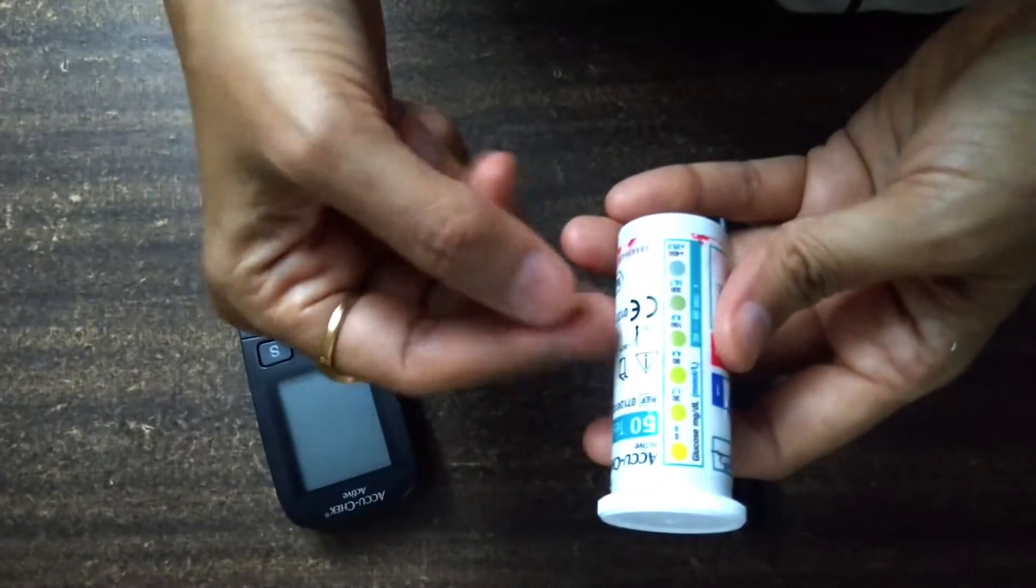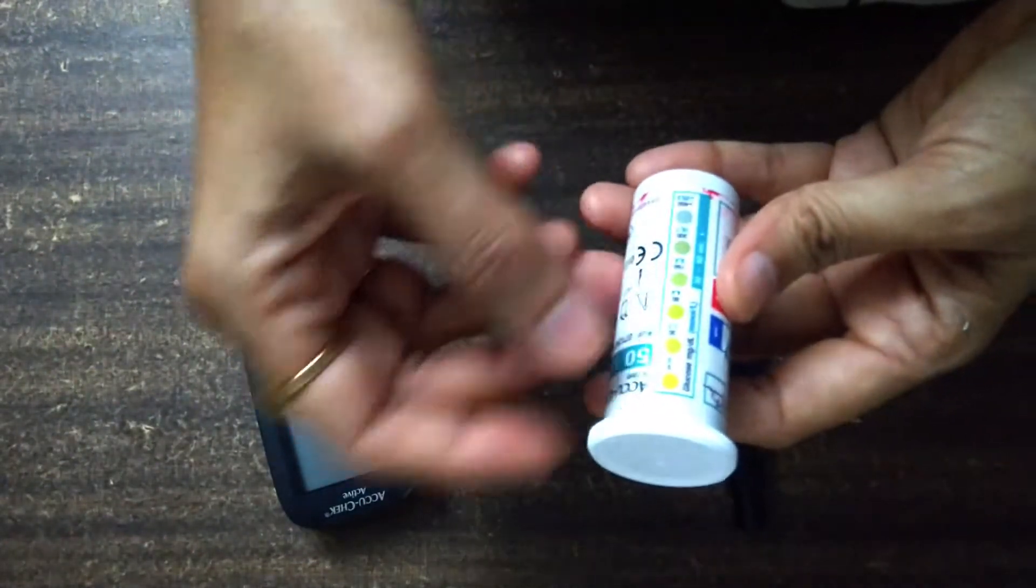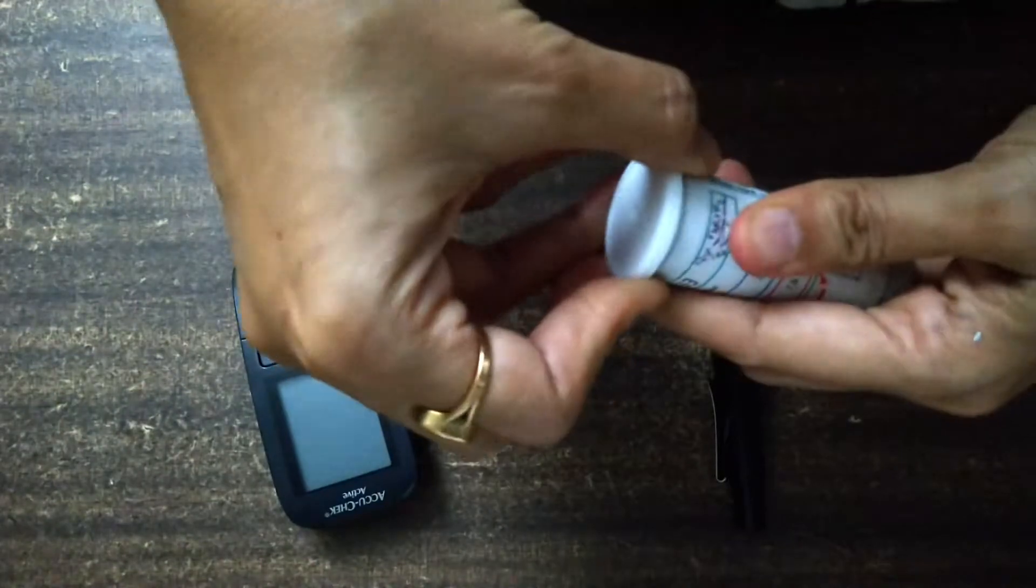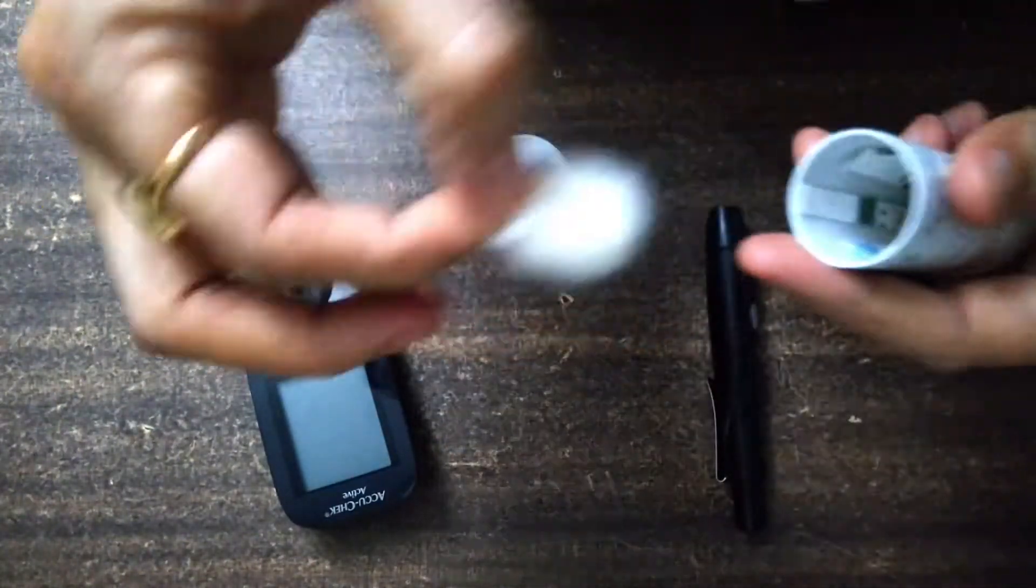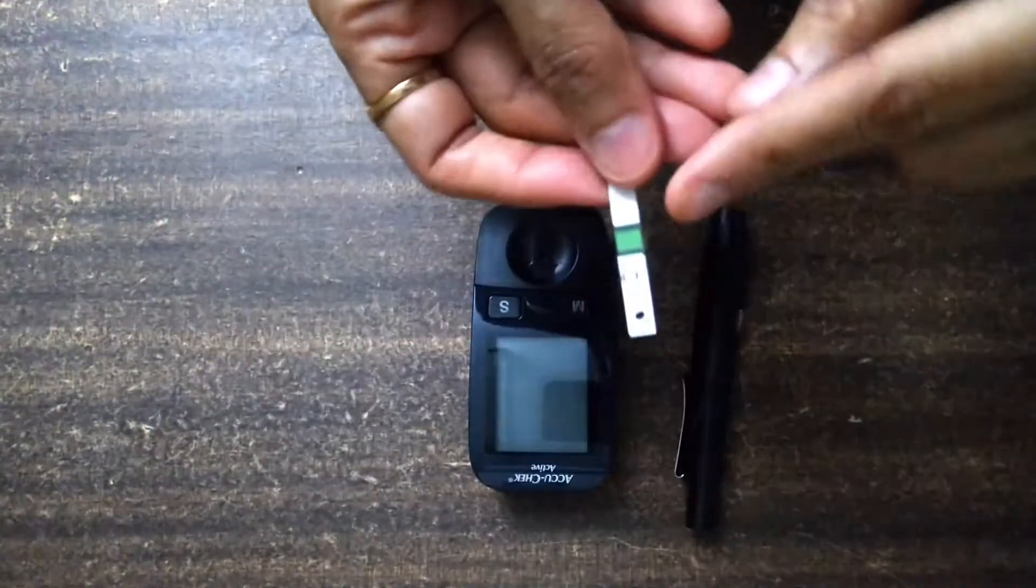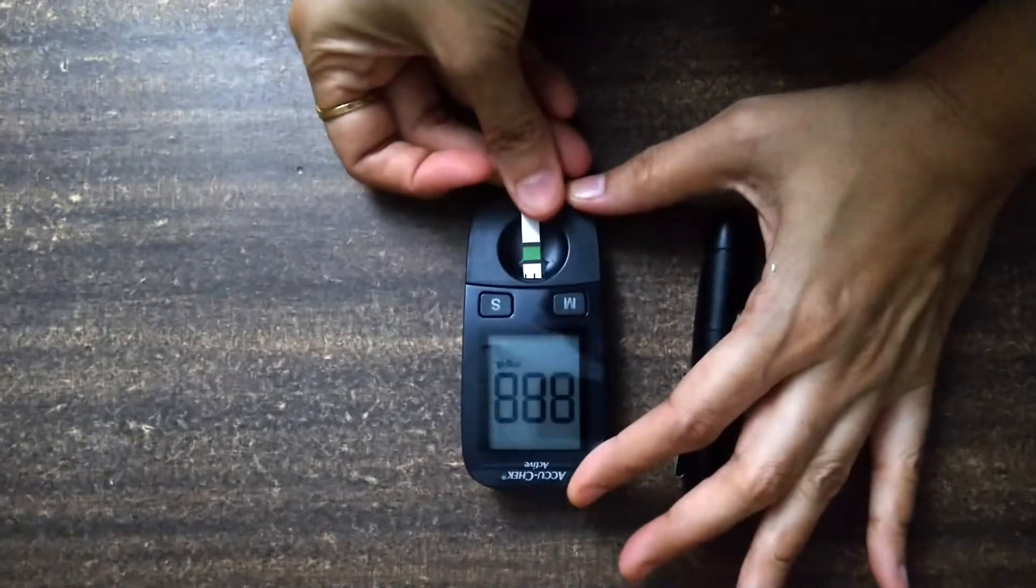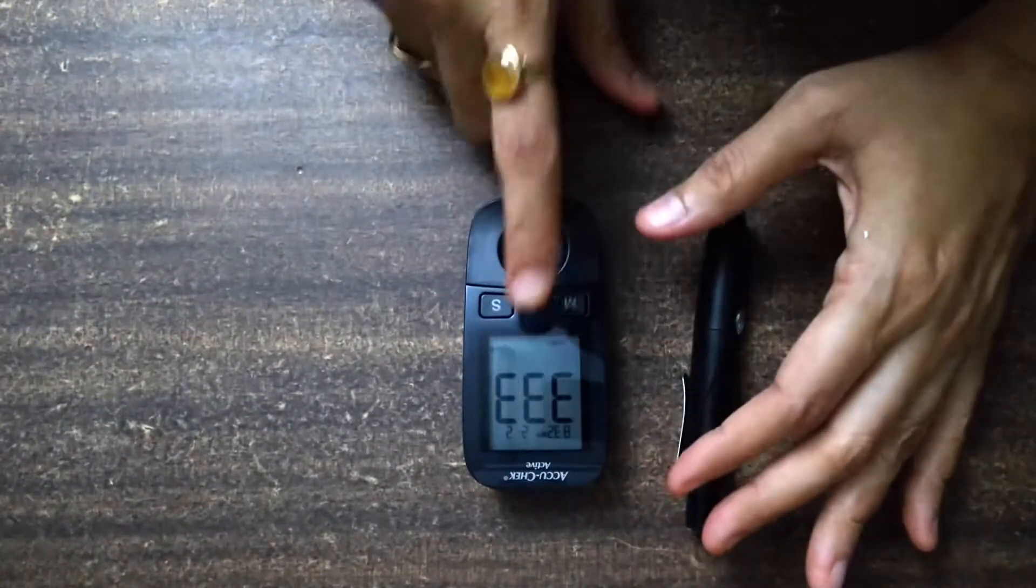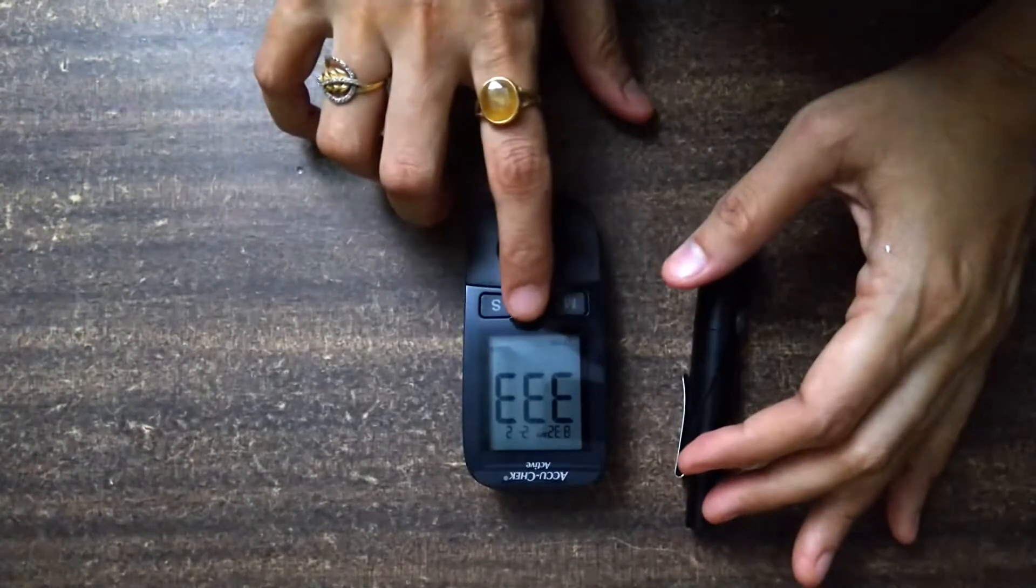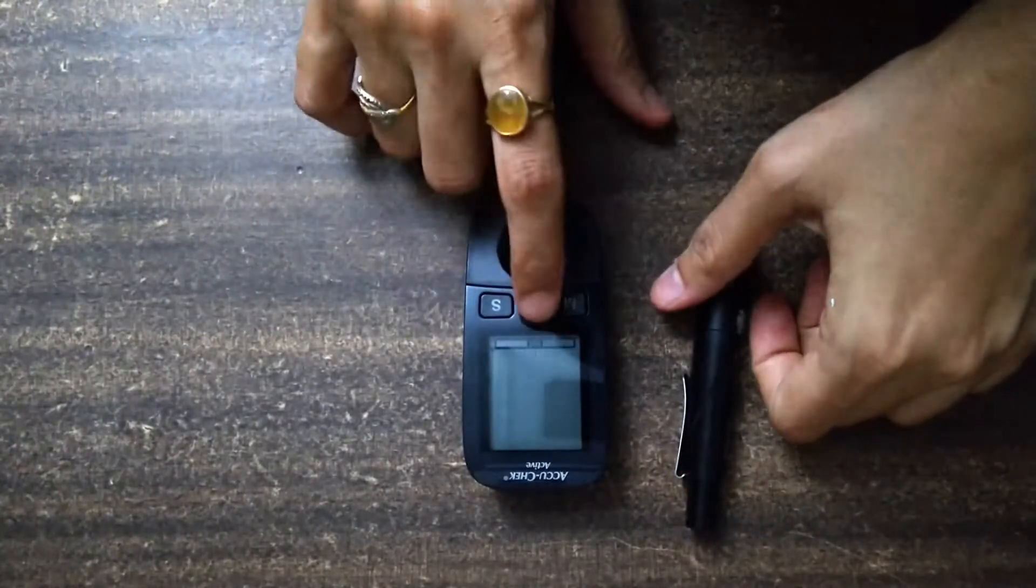What the strip is different colors, so we will change the strip. Now I will take out the strip. Now this is ready to use, you will have blood draw, that means it is ready to use.